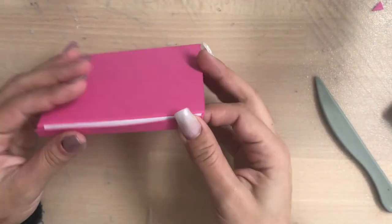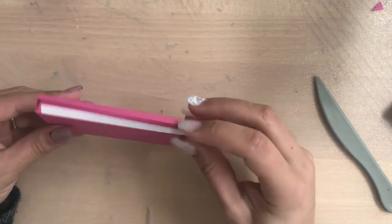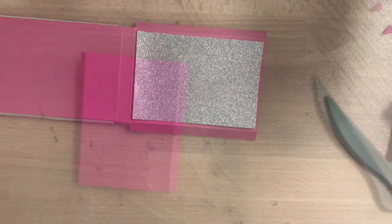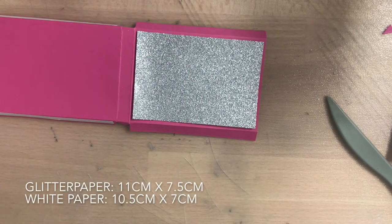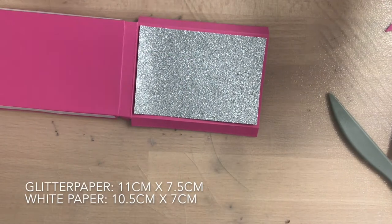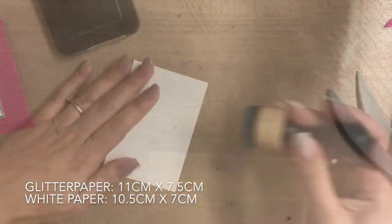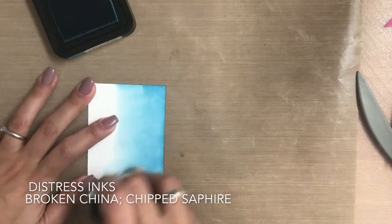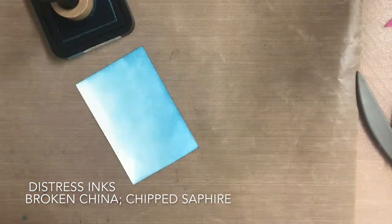Here's a sneak peek on how this box will look like when it's finished. Now you have some glitter paper with measurements of 11 centimeter and 7.5, and a white panel which measures 10.5 centimeters and 7 centimeter.